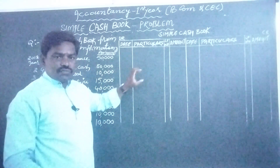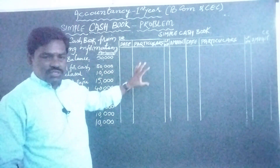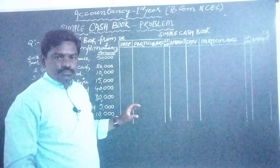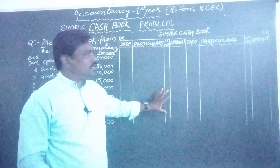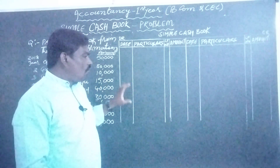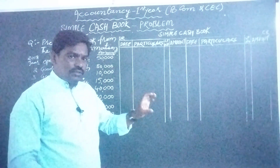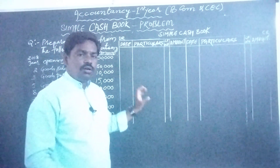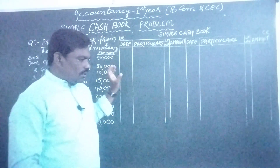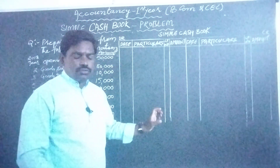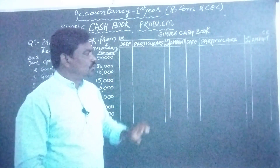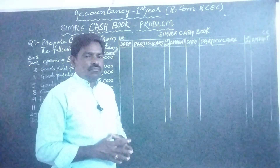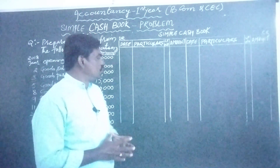After entering all transactions in the cashbook, we have to find the closing balance. How do we derive the closing balance? Simply subtract the total credit amount from the total debit amount and you will find the closing balance. That is the fourth step.